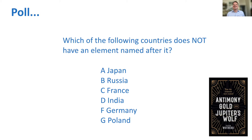Russia has an element named after it, and the answer actually is India. There are a number of elements named after countries: ruthenium is named after Russia (the Latin form), and we have germanium, polonium, francium, americium, and nihonium — named after Japan.